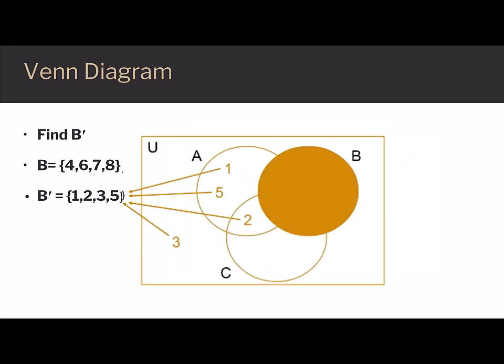The elements not in B are 1, 2, 3, and 5, so this would be the complement of B.